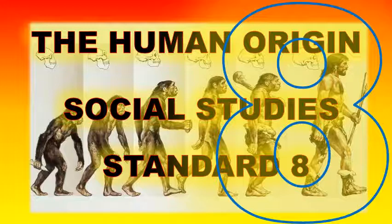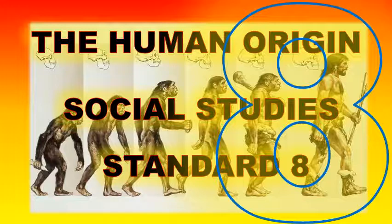After Homo erectus, a more advanced man appeared called Homo sapiens, meaning a thinking man. Homo sapiens carried out various economic activities such as hunting, gathering, and fishing. The period in history when human beings widely used stones as raw material to make tools and weapons is called the Stone Age period. The Stone Age period is divided into three stages.